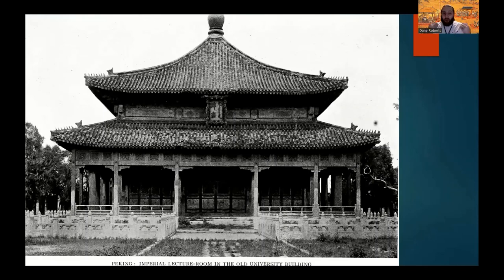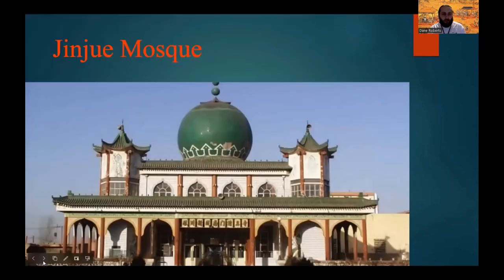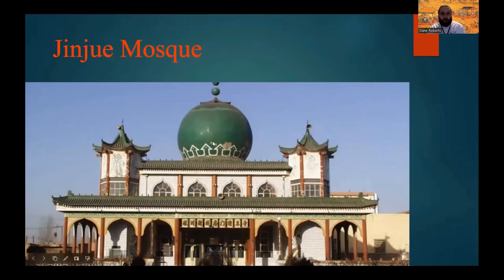He understood that education was the backbone of any stable, powerful empire, and that competent generals and government bureaucrats required proper education. He was also relatively lenient on most religions in China — allowing Buddhism and Taoism to continue, and even acting as a patron of Islam, constructing the Jinjue Mosque that still stands to this day.